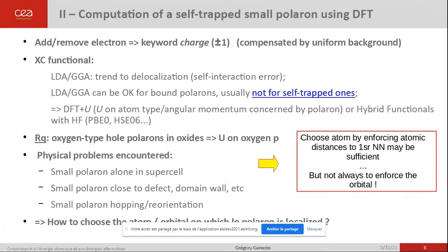Let us see how to compute a self-trapped polaron with DFT and how it can be done with Abinit. First, you have to add or remove one electron, which is done by the keyword 'charge'. Concerning the exchange-correlation functional, standard local and semi-local functionals are usually unable to produce a self-trapped polaron because of their trend toward delocalization due to the self-interaction error. Typically, it is better to use DFT+U or hybrid functionals such as PBE0 or HSE.